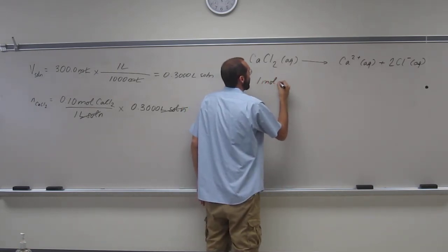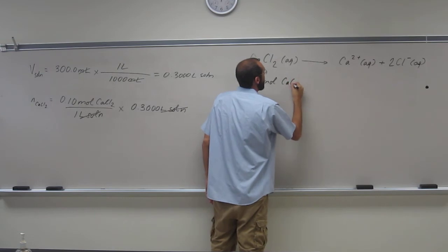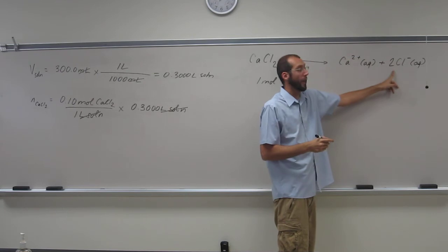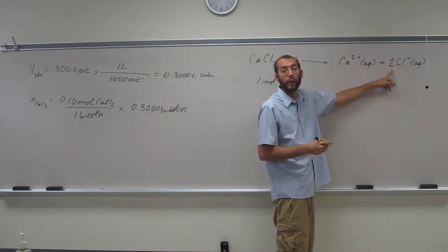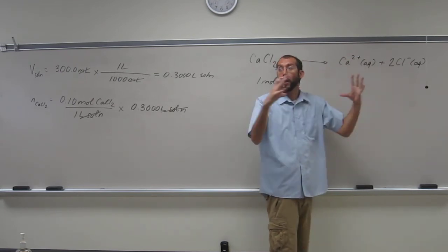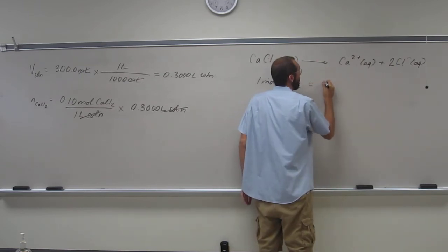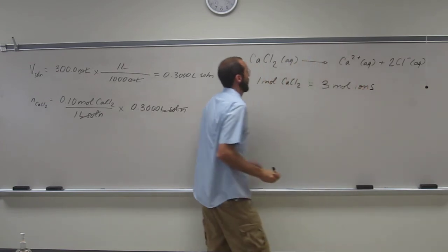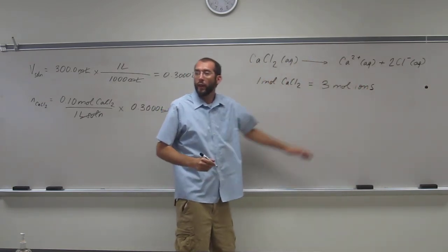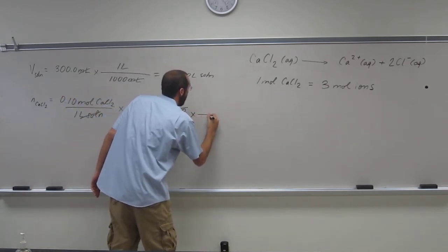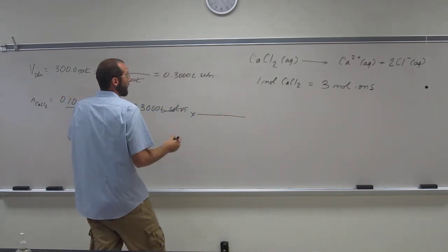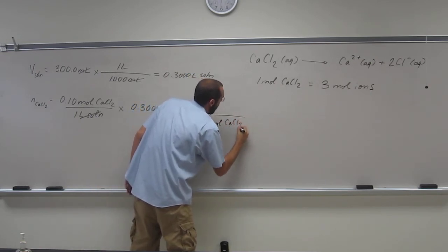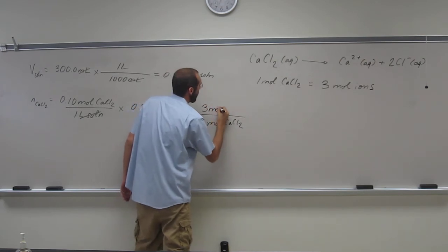So we've got the conversion factor of one mole of CaCl2. So one mole of Ca2+ and two moles of Cl-. So if we add two plus one for a combined total of ions, it's going to be three moles of ions. So that gives us a conversion factor. So moles of calcium chloride on the bottom, three moles of ions on the top.